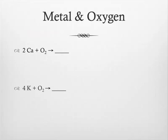When you have a metal and an oxygen together, you get metallic oxide. So for example, when you have calcium and oxygen together, you will get calcium oxide. And when you have potassium and oxygen together, you will get potassium oxide.